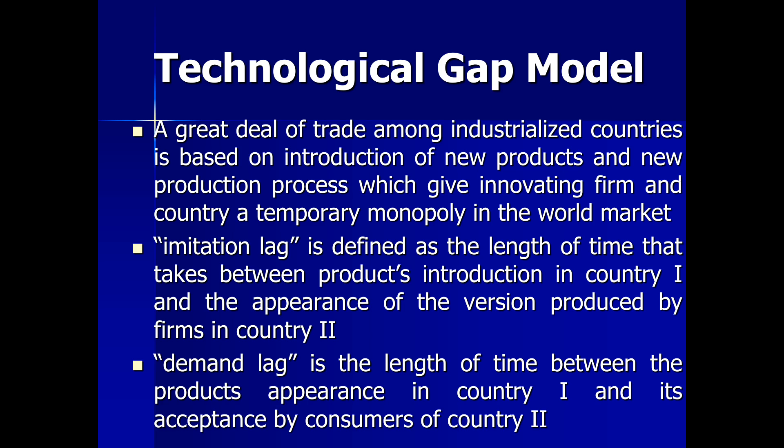This model also provides another lag, known as the demand lag, which is defined as the length of time between the product's appearance in country 1 and its acceptance by the consumers of country 2 as a substitute for products they are currently consuming. A notable feature of the technological gap model is that it compares the two lags — the imitation lag and the demand lag. It says that the imitation lag minus the demand lag is the net lag or monopoly period in which the innovating country holds monopoly power. For example, if the imitation lag is 15 months and the demand lag is 4 months, then 15 minus 4 equals 11 months during which the innovating country holds monopoly power over the innovative product.